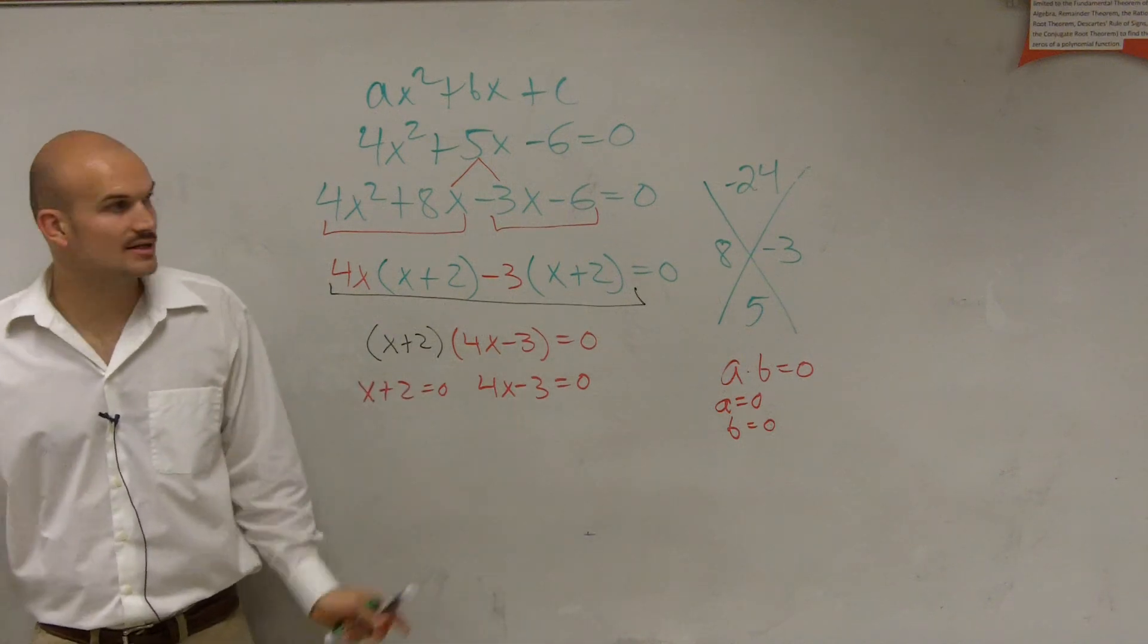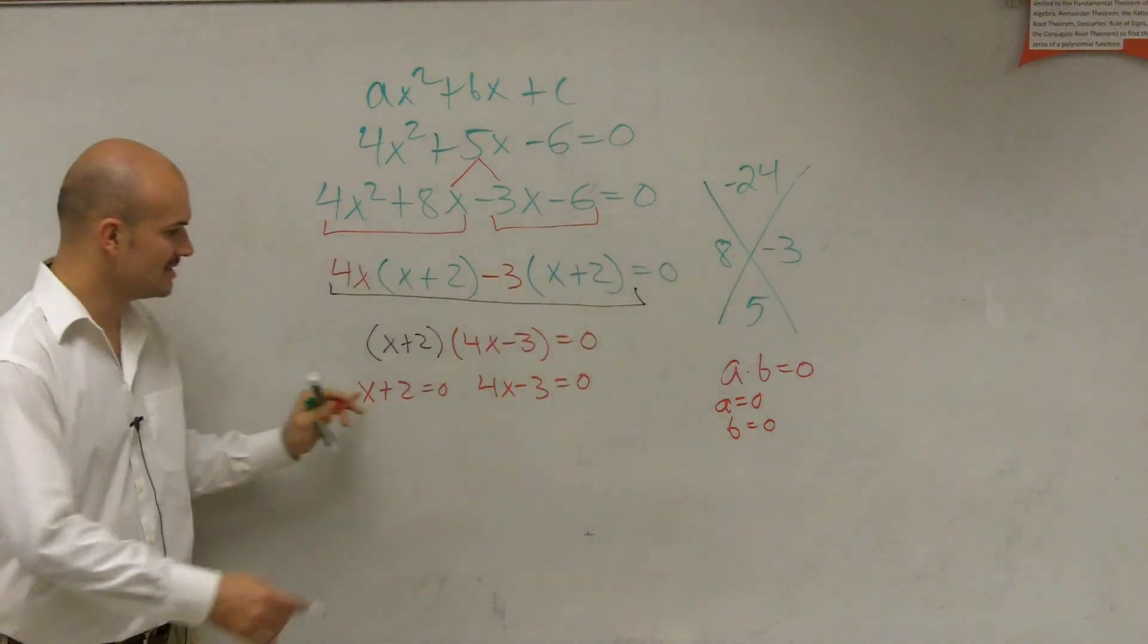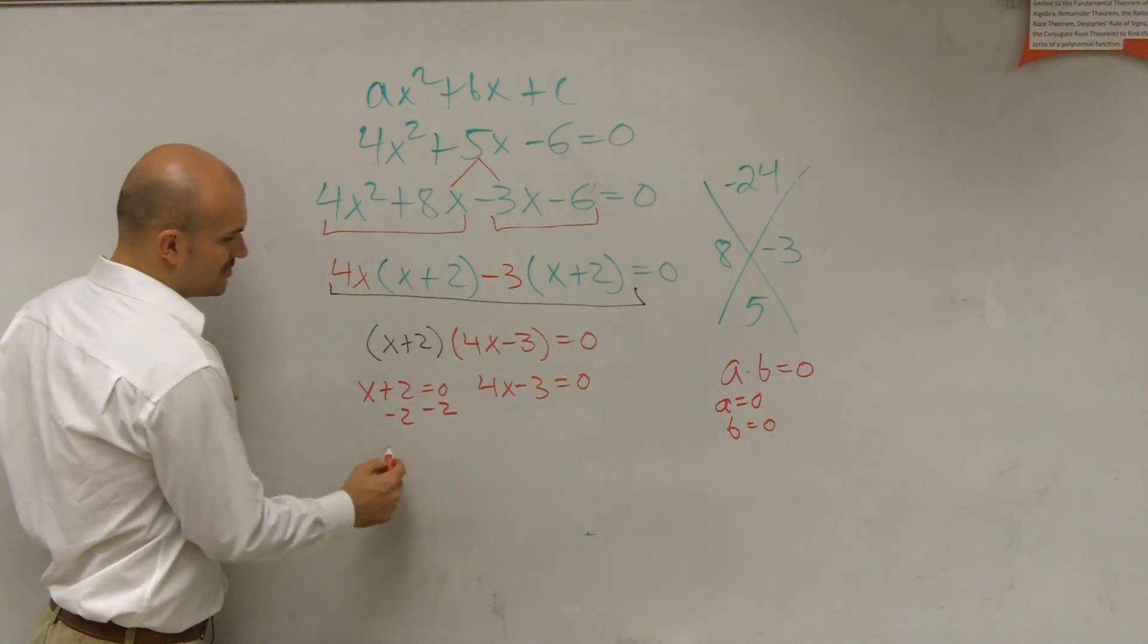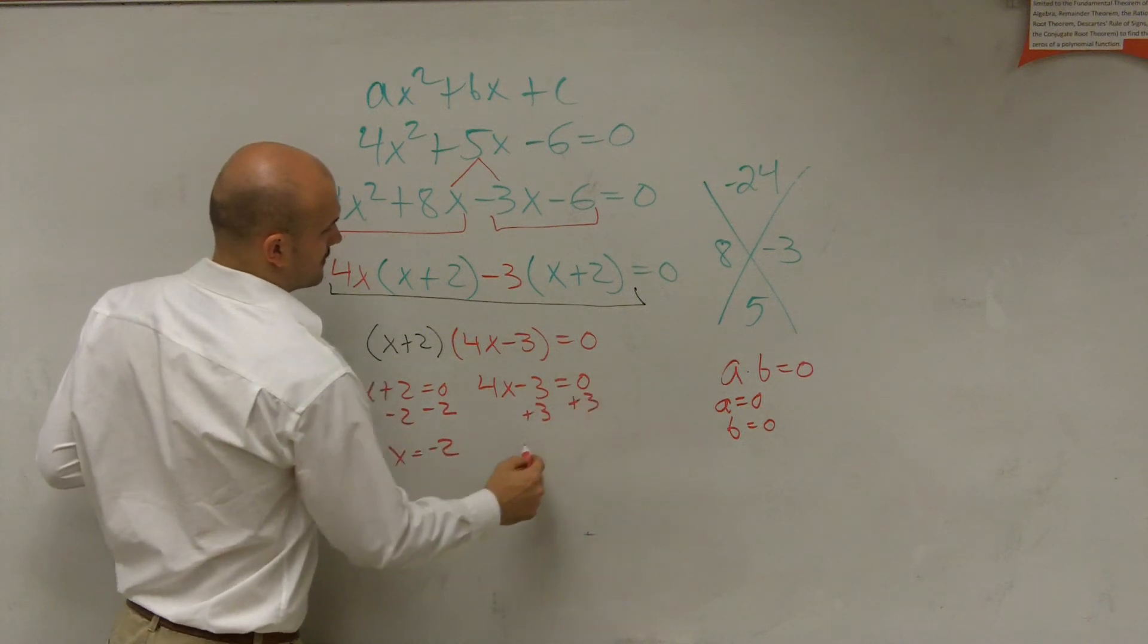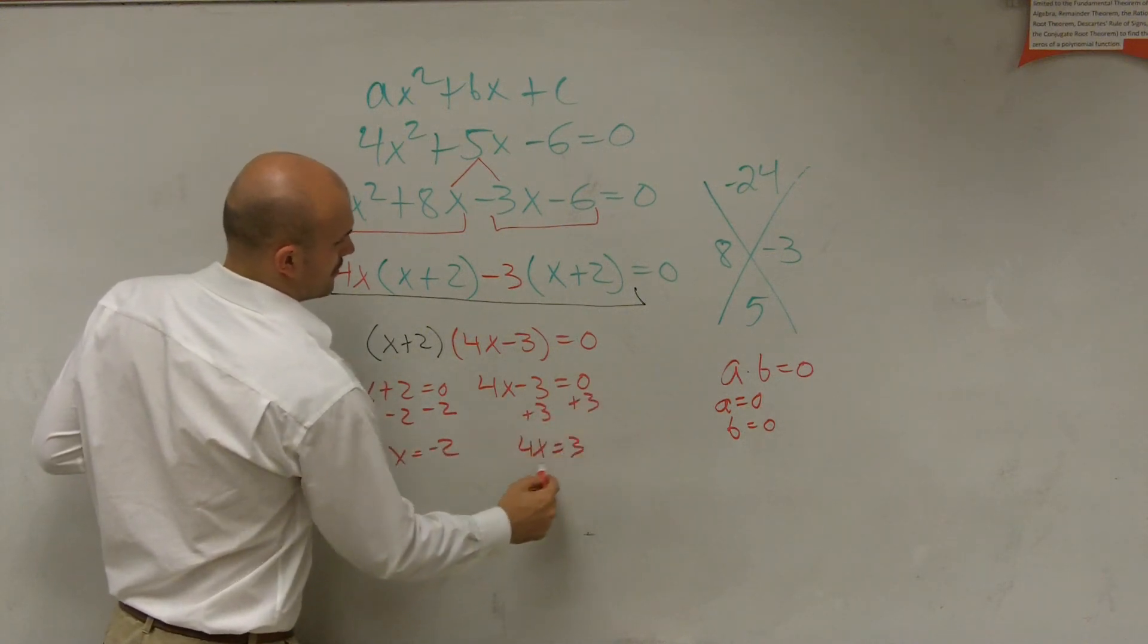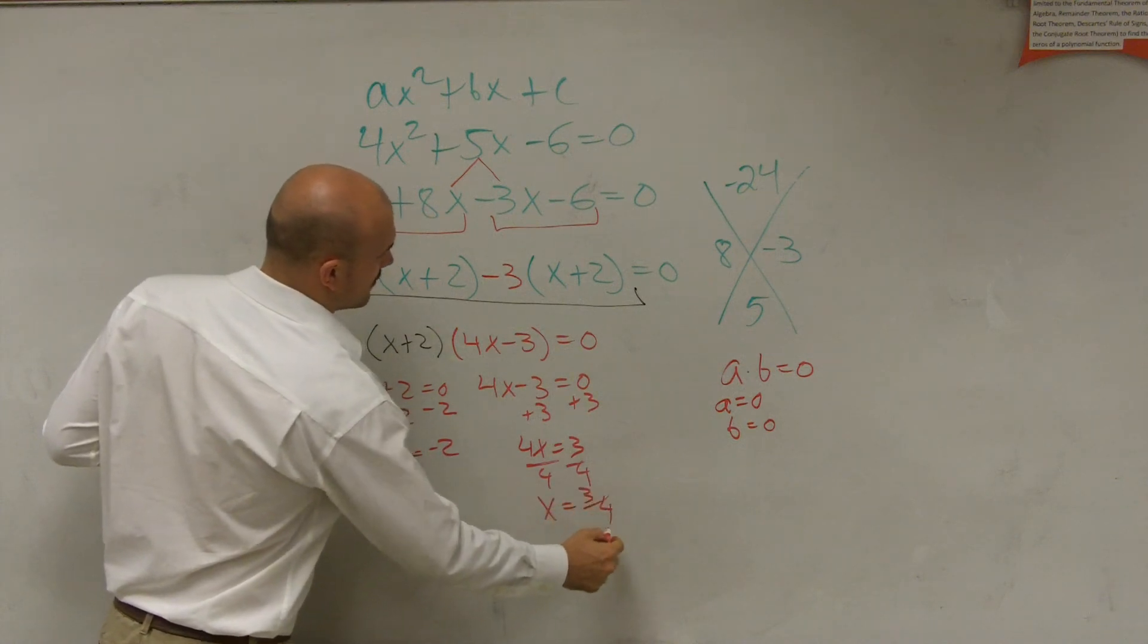Now, are these linear terms? Can we solve them like I did in that first problem, Algebra 1? Yeah, you just isolate the variable, right? Undo what's happening to the variable. Here, add 3, divide by 4, x equals 3 fourths.